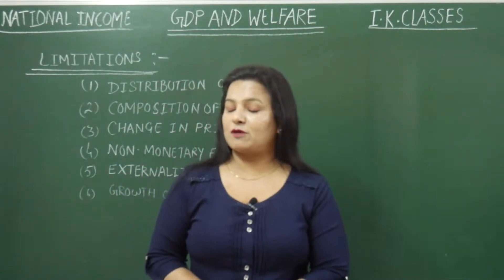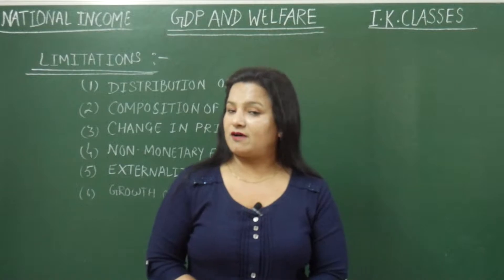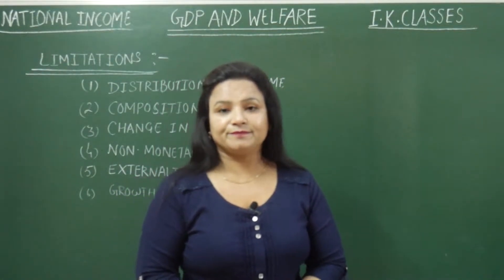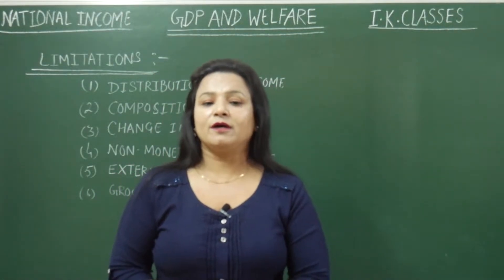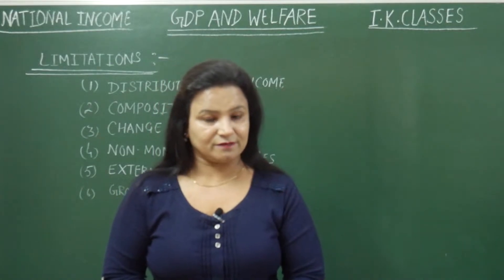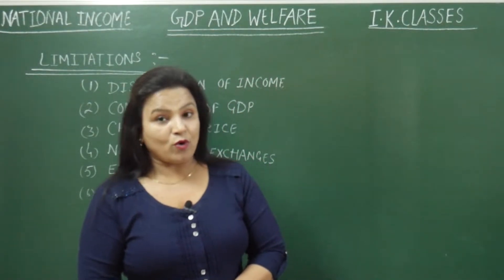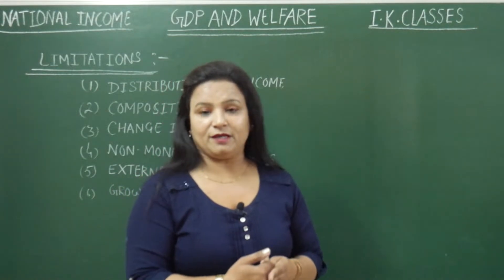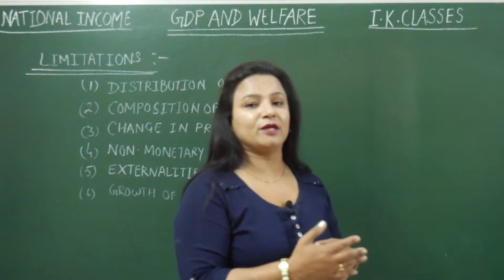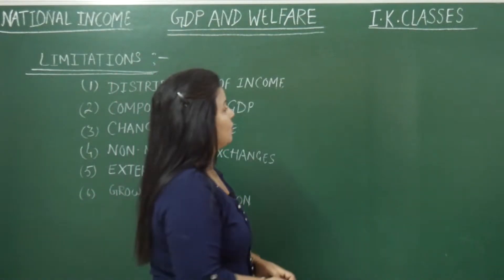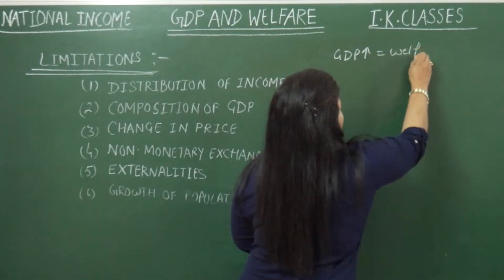First, what is GDP? GDP means production of goods and services, and a rise in GDP means more production of goods and services. And welfare — welfare is the material well-being of people, measured in terms of per head availability of goods and services. If per head availability is more, it means more welfare. So if GDP rises, per head availability rises, and welfare of the people also rises.